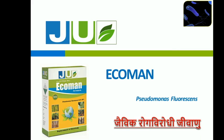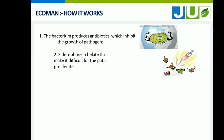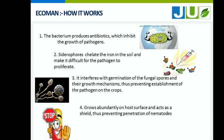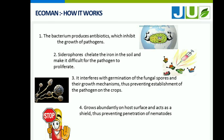Ecoman is a biological fungicide. The bacterium produces antibiotics which inhibit the growth of pathogens. Siderophores chelate the iron in the soil and make it difficult for the pathogen to proliferate.